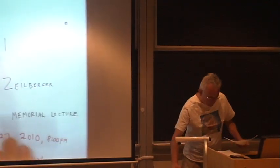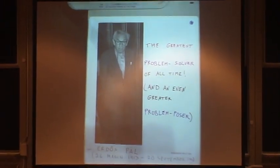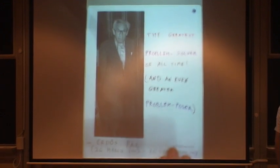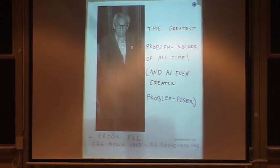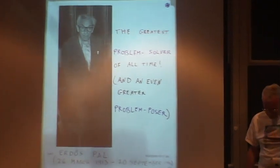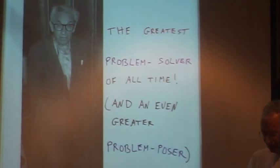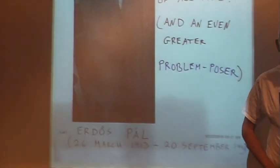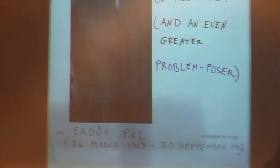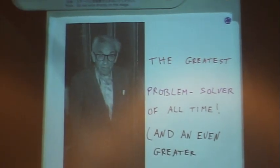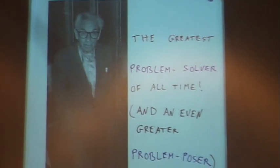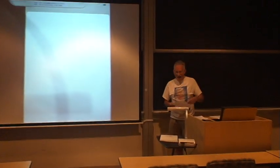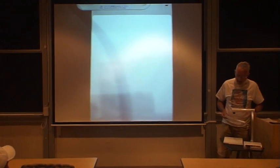Paul Erdős was the greatest problem solver of all times and he was even a greater problem poser. He was born on March 26, 1913 and died on September 20, 1996. This is his picture drawn by Fan Chung. It's a wonderful painting by Fan Chung. I stole it from her website and I thank Fan Chung for her portrait. Paul Erdős was my hero and many, many other people's hero. And he loved mathematics for its own sake. And he loved problems.